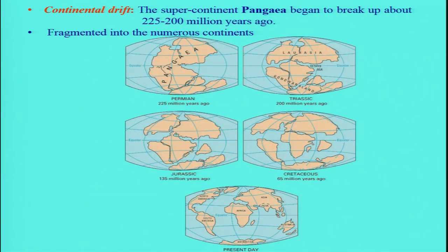This is a time series diagram starting from the Permian, about 225 million years ago, showing how the continents separated and finally reached the present configuration. India is now sitting much further north of the equator, but in this diagram you can see it was once located south of the equator.